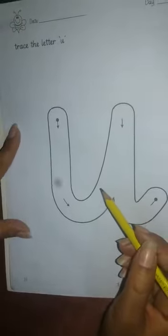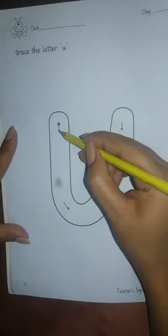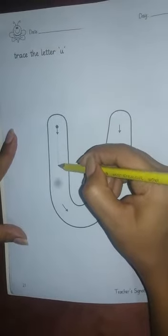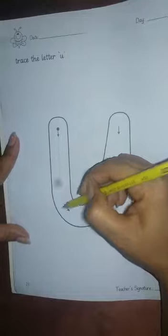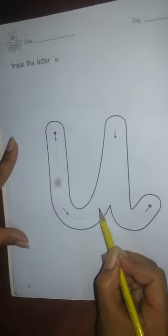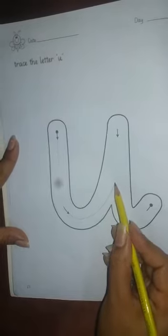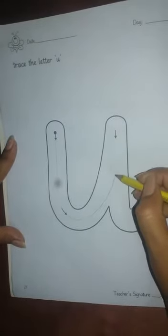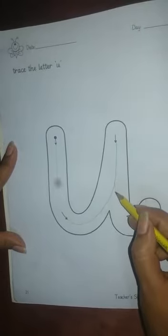Now let's trace it, okay? Start from the arrow and just trace it, okay? U, okay. U.